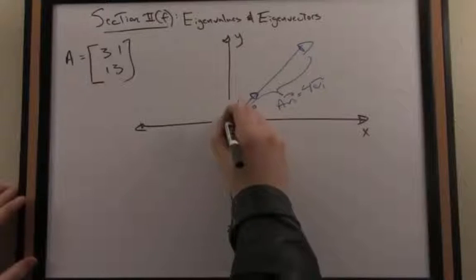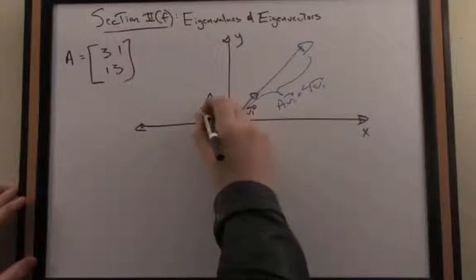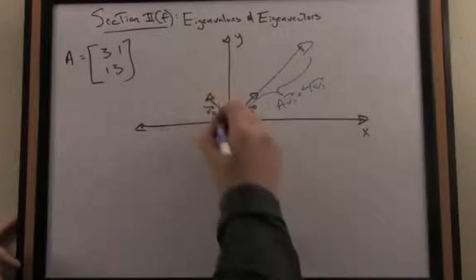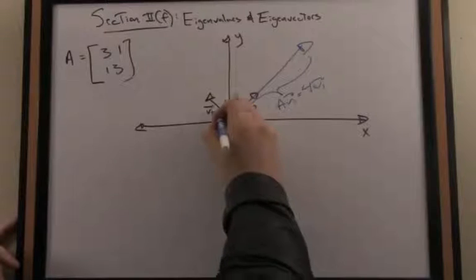But one of the other eigenvectors associated with that particular matrix, we'll call that vector V2, is the vector [-1; 1], as I've drawn here. And the eigenvalue associated with that particular eigenvector is the value 2. So lambda is 2 for this particular eigenvector.